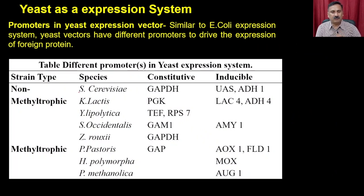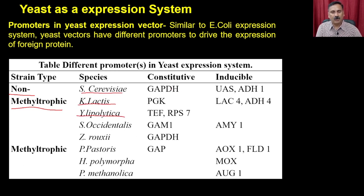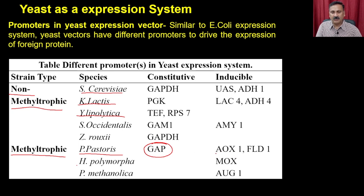This table shows the species and whether they use constitutive or inducible promoters. In the non-methanolotrophic strains - S. cerevisiae, K. lactis, Y. lipolytica - you can use an array of constitutive promoters as well as inducible promoters. In the methylotrophic strains such as Pichia pastoris and Pichia methanolica, you can use the GAP promoter as a constitutive promoter, or inducible promoters such as AOX1, FLD1, MOX, and AUG2. Depending on the combination, you can devise strategies to produce a protein in the yeast expression system.